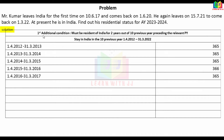Additional condition 1: out of 10 previous years, 2 years must be resident. Now, the first time he leaves is 10-6-17. So for the year 16-17, he was in India up to 10th June 2017. We count days in India for that year.